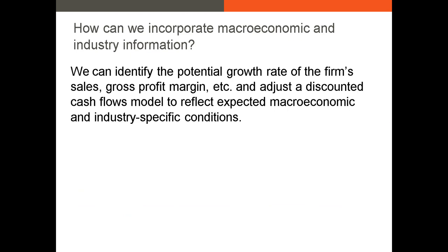Once we've identified the forces affecting the industry, the supply chain and its threats, and the sales coming from various industries or countries, how do we use that information? If we're building a spreadsheet model, we can take that industry information — along with the macroeconomic information we've already collected — and adjust our estimates of sales, profit margin, and discount rate in our models. The information you collect on your firm's industry should give you a sense of how profitable it's going to be and how many units it can sell in the future, so we use it to improve our valuation model.